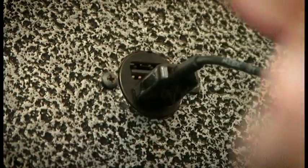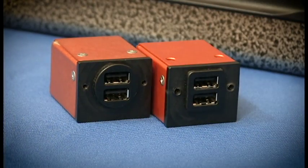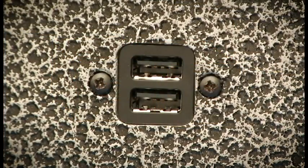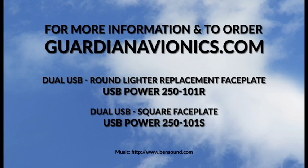The USB Power 250 is available in both the round faceplate for cigarette lighter replacement and an optional square faceplate for custom panel installations. Please specify at the time you order.